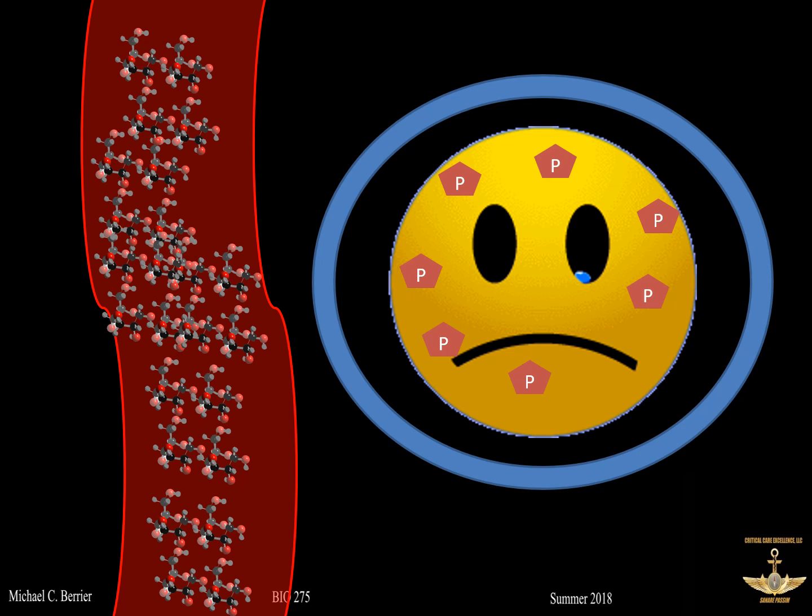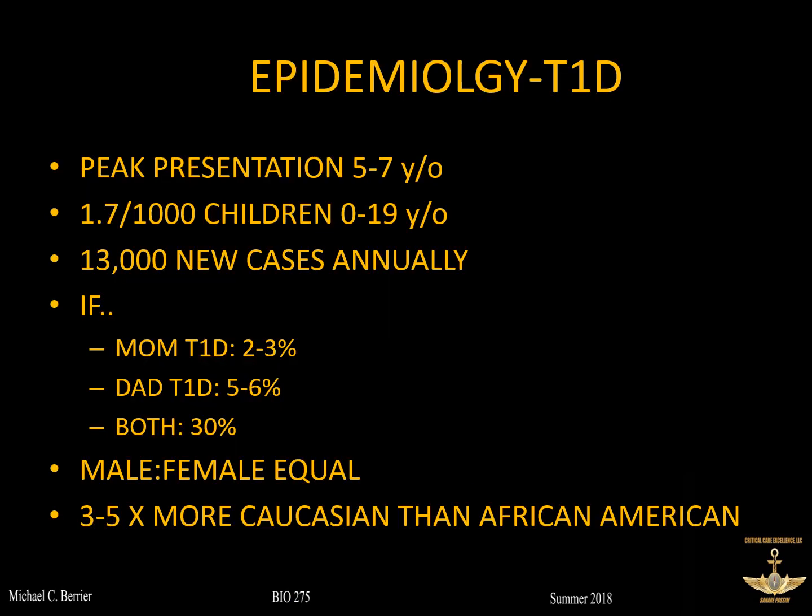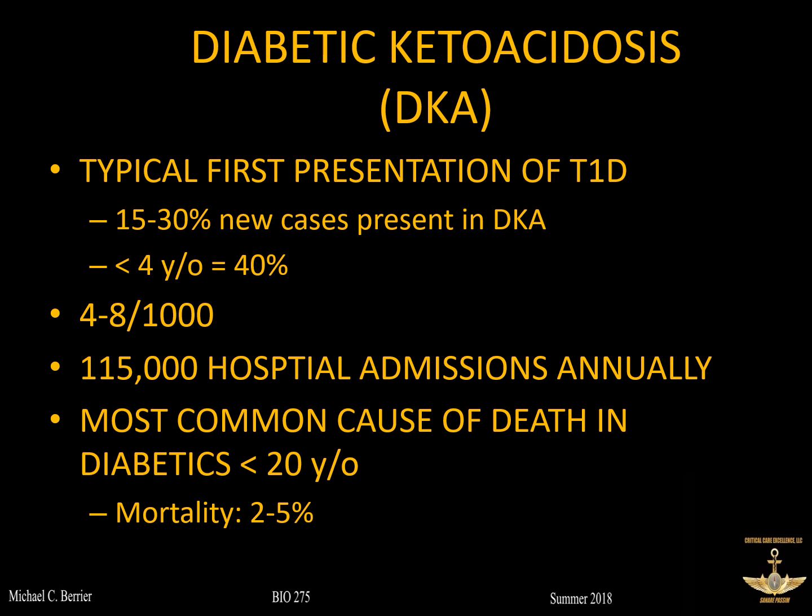Epidemiology of type 1 diabetes: peak presentation is around five to seven years old. A little less than two out of every thousand kids under 19 has it, with about 13,000 new cases per year. If mom is a type 1 diabetic, you have about a 3% chance; if dad is, about 6%; if both are, your chances go up to almost 30%. There is no real gender bias, but type 1 diabetes is three to five times more prevalent in Caucasians than African-Americans.